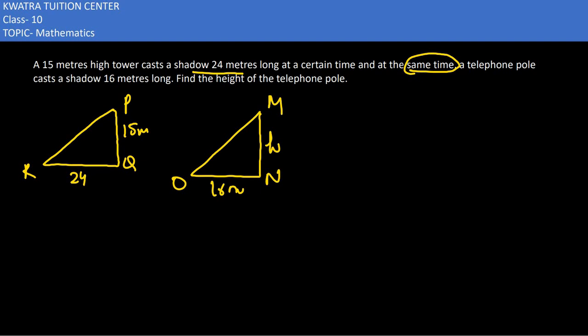Moving to the next one, it says a 15 meter high tower casts a shadow of 24 meters. In the second case, a telephone pole of height h casts a shadow 16 meters long. Now these two triangles must be proportional to each other because they are being formed at the same time.